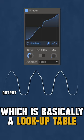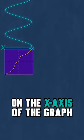First we place the amplitude of the input signal on the x-axis of the graph. We then find its corresponding y-coordinate on the transfer curve and send that to the output.